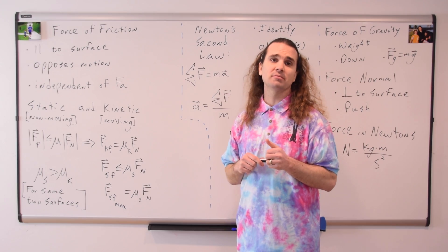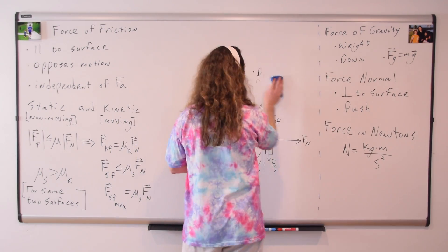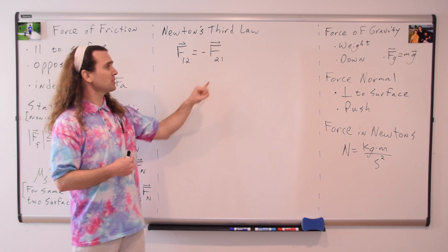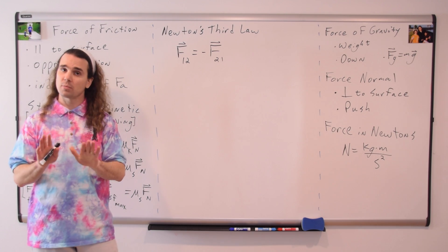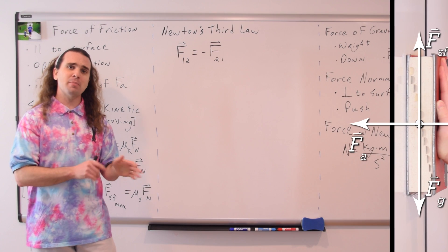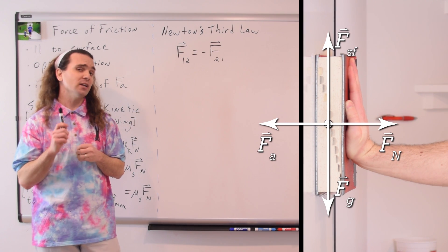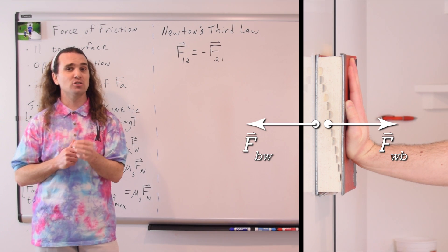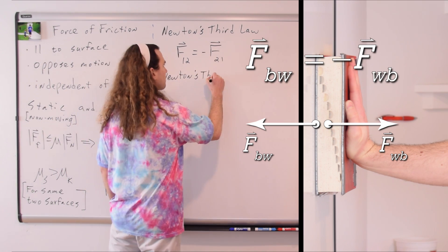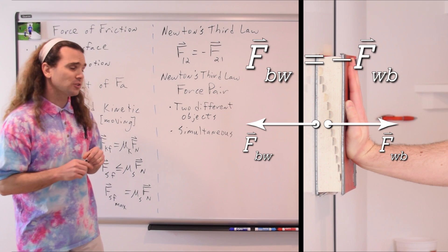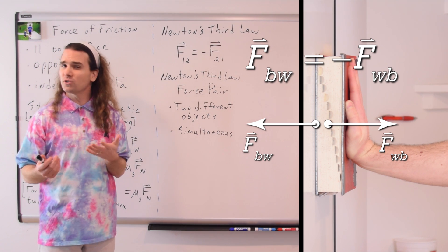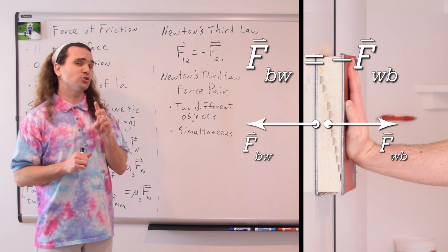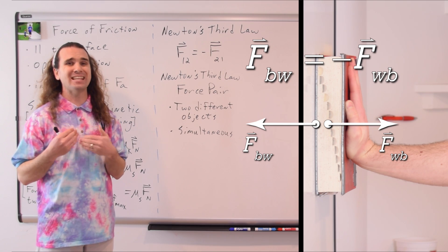We still have one of Newton's three laws of motion that we need to talk about. For every force object one applies on object two, there is an equal but opposite force that object two applies on object one, where both forces are vectors. Going back to our free body diagram of the book against the wall and looking just at the force normal — the force from the wall on the book — there exists an equal but opposite force from the book on the wall. Those two forces form a Newton's third law force pair, also sometimes called an action-reaction pair. Notice that those two forces act on two different objects — the book and the wall — and those two forces act simultaneously.